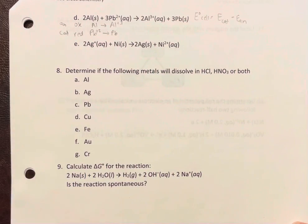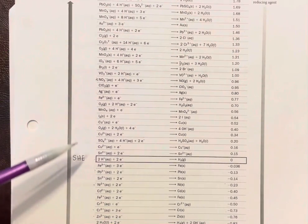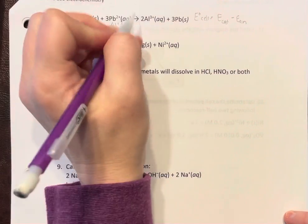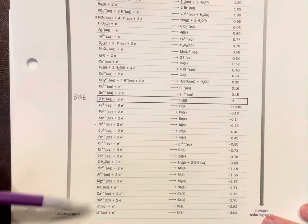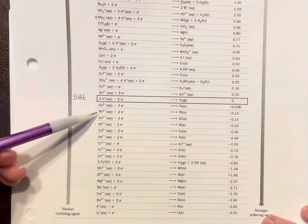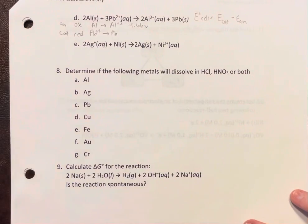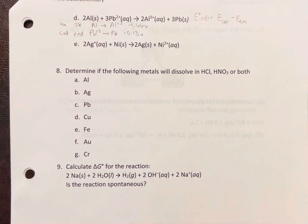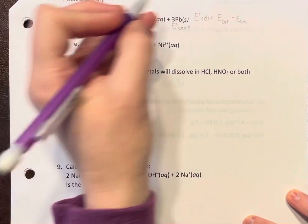Other tricks here: aluminum, find it way down here, negative 1.66, and lead two is negative 0.13. All right, if you say oh the cathode is above the anode it is spontaneous, you would be correct.